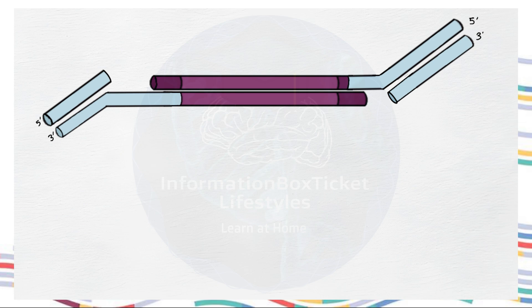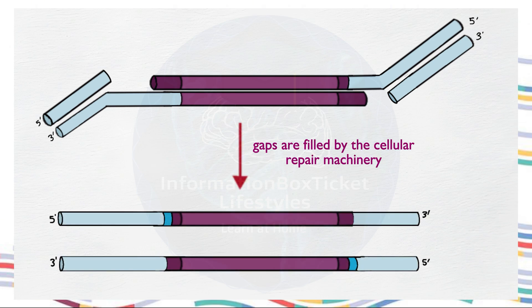Subsequently, any open gaps are filled by the cellular repair machinery. This process essentially explains how retroviral retrotransposons become integrated into the genome.